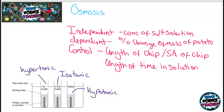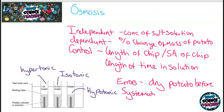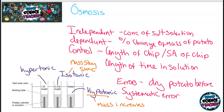You may also encounter a couple of errors in this practical. For example, some people forget to dry the potato before weighing — if you don't do that for all potatoes, this would be a systematic error affecting all your results. What you should observe is that in the hypotonic solution, the mass increases as water moves into the potato chip by osmosis. In the isotonic solution there's no noticeable change, and in the hypertonic solution the mass of the potato chips decreases, giving a negative percentage change of mass.